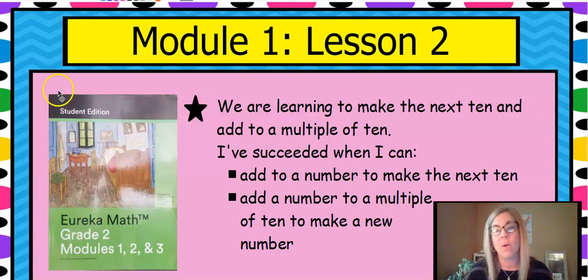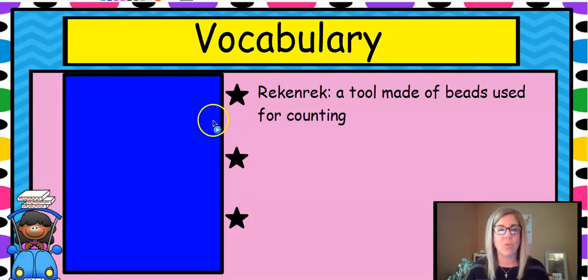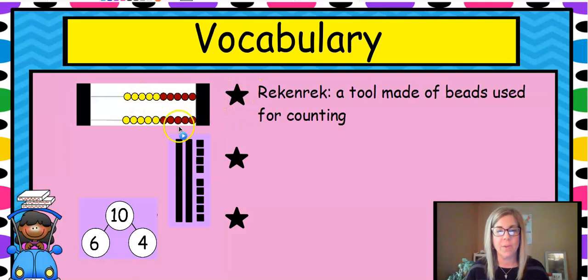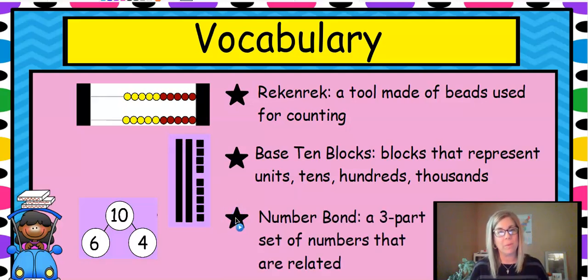Now, we're going to talk about exactly what multiples are. Rec and Rec, of course, is this tool right here. Base 10 blocks that represent units, 10s. These are units, and these are 10s. And then there's hundreds and thousands. And another word that you're probably familiar with is number bond. It's a three-part set of numbers, and they're all related. It's like a fact family, and we're going to deal with some of that today.